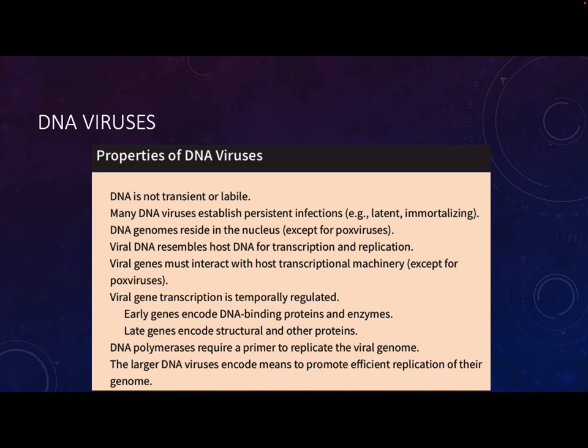Herpes viruses like Epstein-Barr can cause lymphoma. The viral DNA has to go into the nucleus - the exception is the pox viruses like smallpox, which bring their own polymerase and don't put their DNA in the nucleus. The viral DNA resembles host DNA, so the host machinery will take it and replicate it without checking whether it's viral or not. DNA viruses also regulate their transcription temporally - early in infection they make DNA binding proteins and enzymes for replication and transcription, and later they make capsid and other structural proteins.